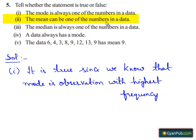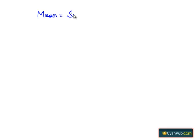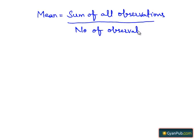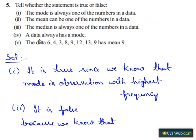The mean can be one of the numbers in a data. The above statement is false because we know that mean is equal to sum of all the observations by number of observations. Therefore mean cannot be one of the numbers in a data. So the above statement is false.